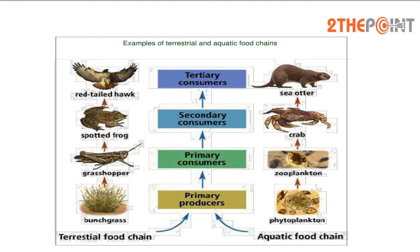An example of a terrestrial food chain: bunch grass is eaten by a grasshopper, which is eaten by a spotted frog, which is ultimately eaten by a red-tailed hawk. In the aquatic food chain, phytoplankton is eaten by zooplankton, which is consumed by crab, and ultimately the crab is consumed by a sea otter.